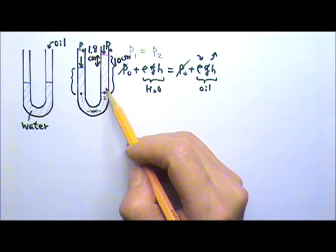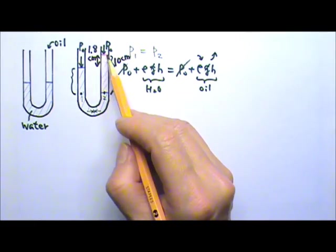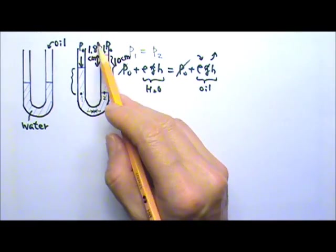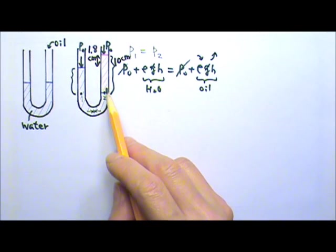If the oil column is 10 centimeters tall and the surface of the oil is 1.8 centimeters above the surface of the water on that other side, what is the density of the oil in here?